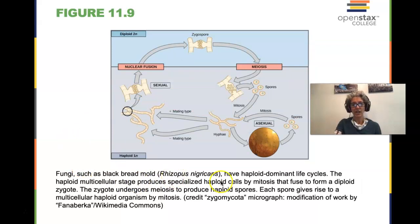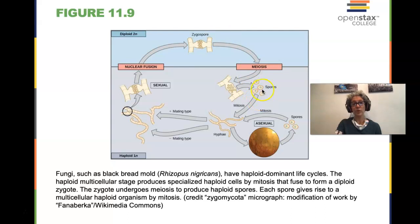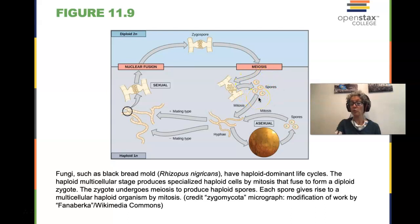Some fungi have a life cycle where the dominant stage is haploid. The only diploid stage is a structure called the zygospore, which undergoes meiosis to create spores. These haploid spores undergo mitosis to create hyphae, these long multicellular structures. Opposite mating types can then fuse to make the zygote. The long multicellular hyphae we see in bread mold is haploid — those haploid spores formed by meiosis undergo mitosis to create a multicellular structure that is haploid.